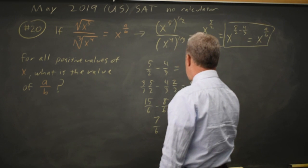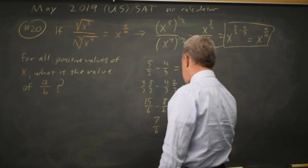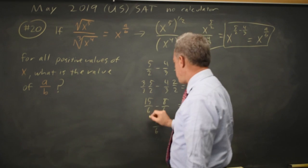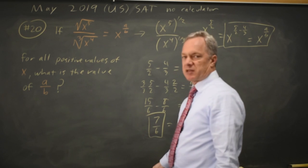And this is equal to a over b. And their question was, what is the value of a over b? So my answer would be 7 over 6.